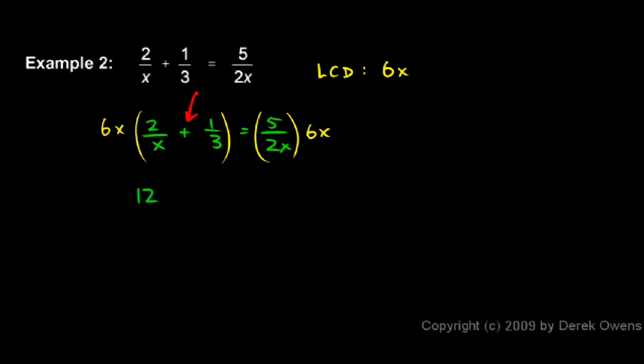And then we have this plus sign, and we're distributing here on the left side. The 6x now needs to be multiplied by the 1 third. And when we do that, you might see that the 6 over the 3 reduces to a 2, and then we still have this x right here. So it's 2x.